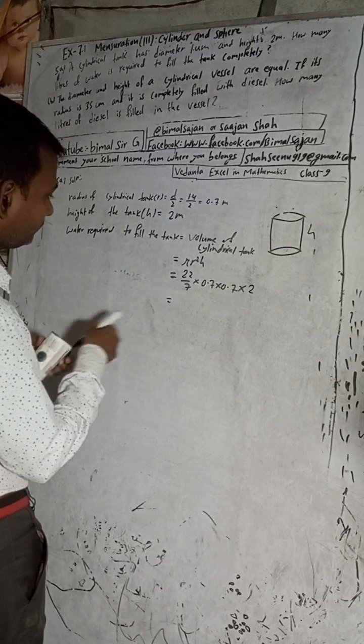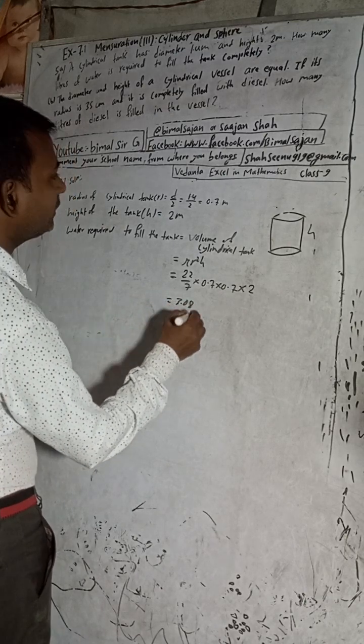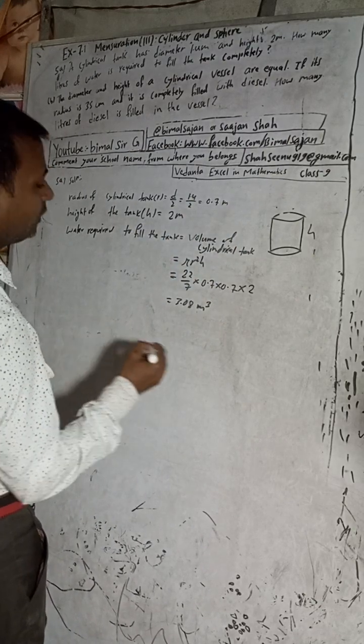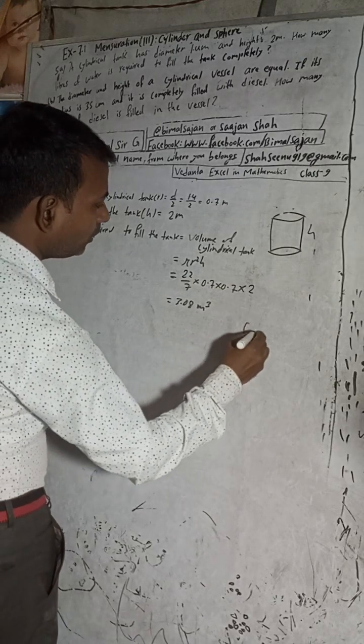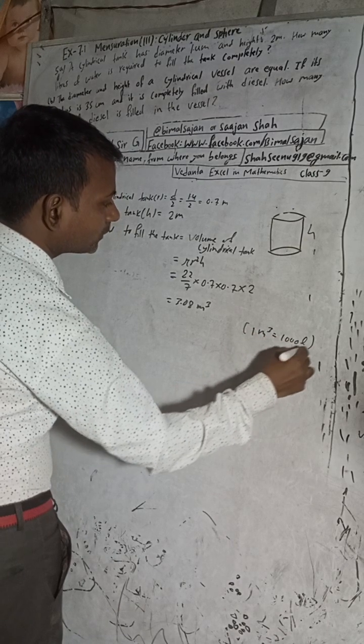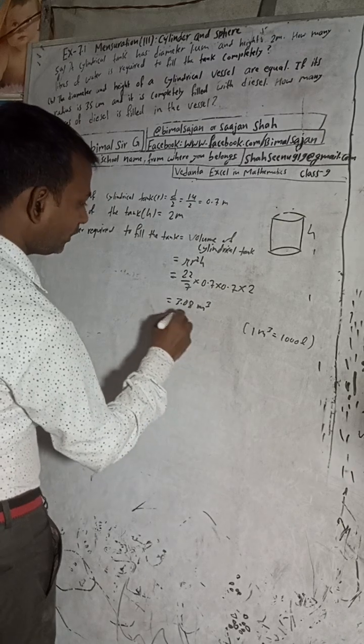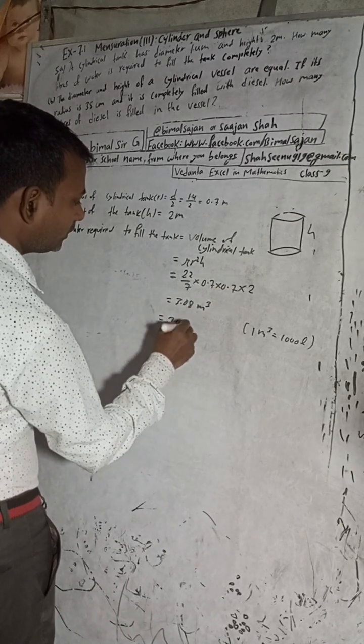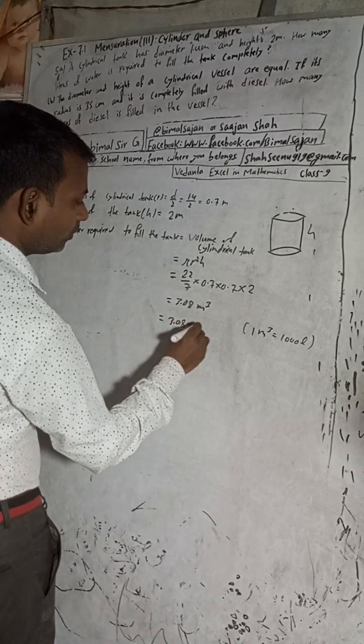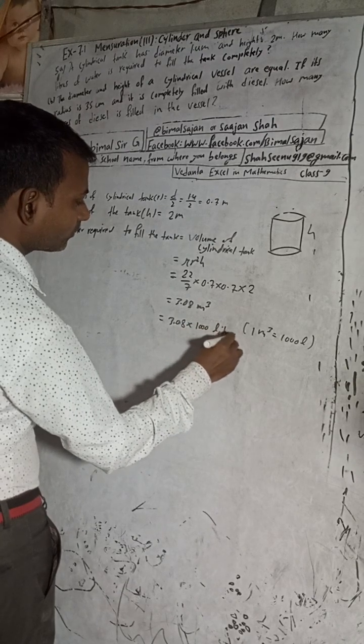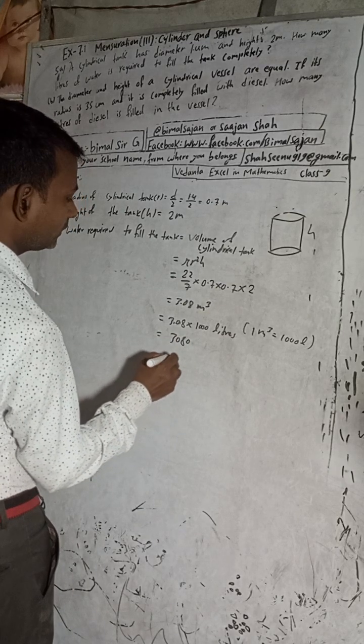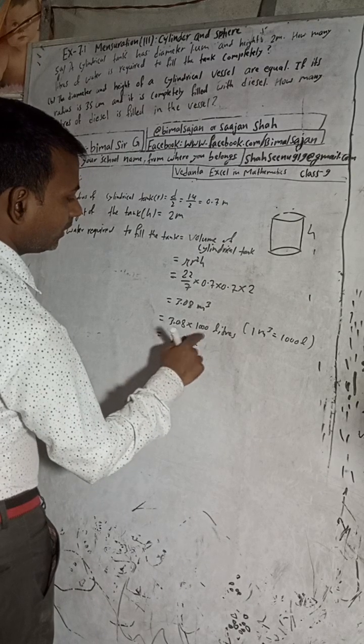Then we're asked how many liters. So we know one meter cube is equal to 1000 liters, so this much meter cube is equal to 3.08 into 1000 liters, this is 3080 liters.